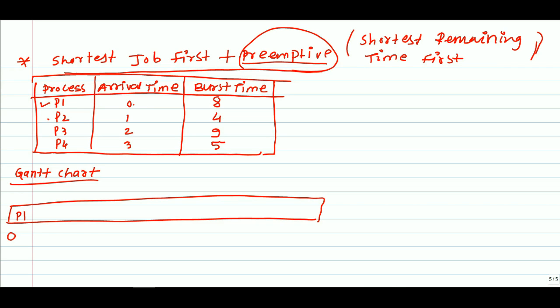We are not going to execute P1 completely because we have the preemptive concept. After one millisecond, P2 arrives. Comparing burst times of P1 and P2, the burst time of P2 is smaller than P1. Shortest Job First tells us we must execute P2, so we take P2 process next.